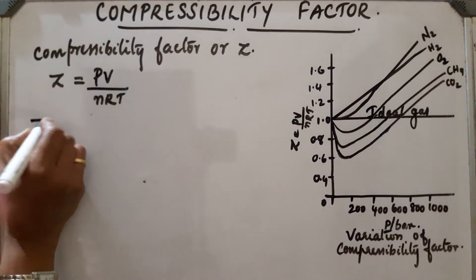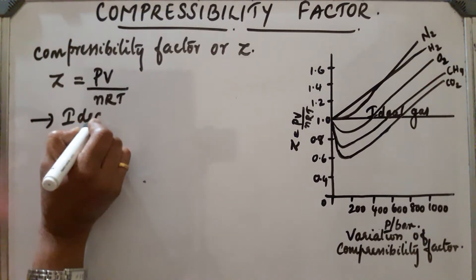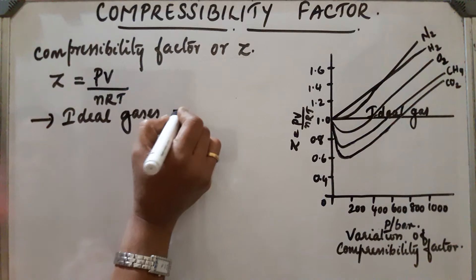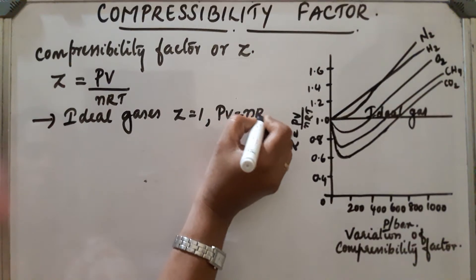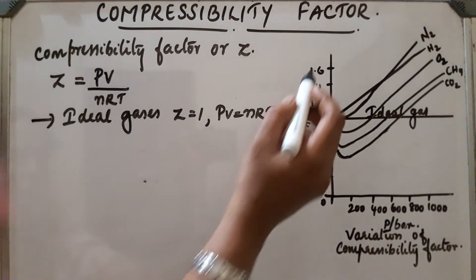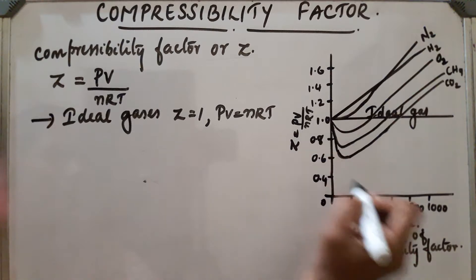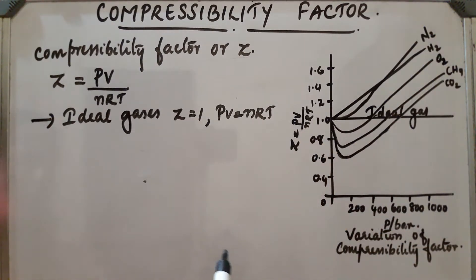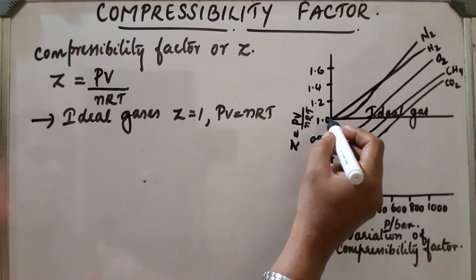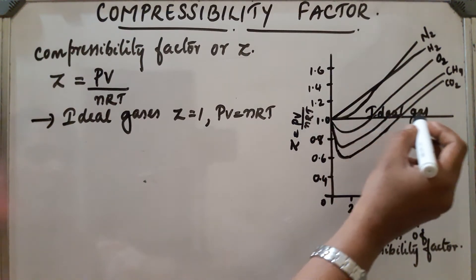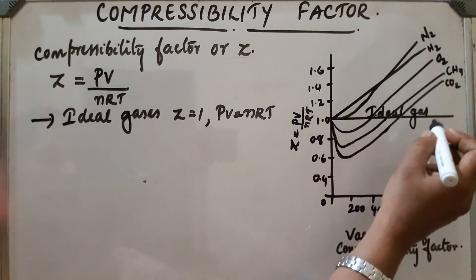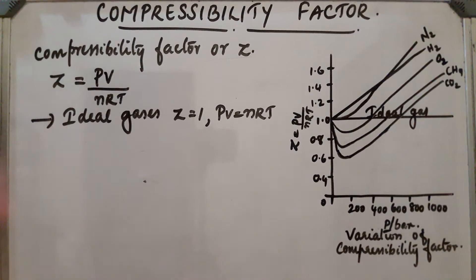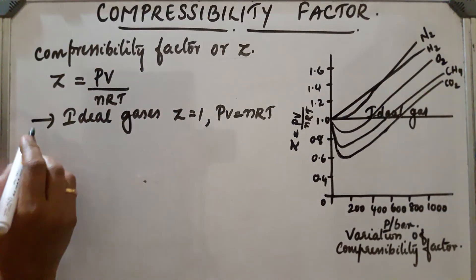For ideal gases, Z is equal to 1, which means PV equals nRT. In this graph, we have drawn Z against P. Z is equal to PV by nRT. At Z equal to 1, gases are ideal. The plot will be a straight line parallel to the pressure axis. So Z is equal to 1 for ideal gases.